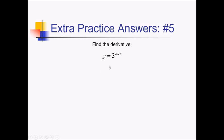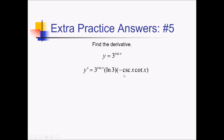On this one, I'm using the chain rule to take the derivative. Right now I've got 3 to the something. The derivative of that is going to be 3 to the cosecant of x, times the ln of 3 — that is all just the outer derivative. Now I have to multiply by the derivative of cosecant of x, which is going to be negative cosecant of x times cotan of x.